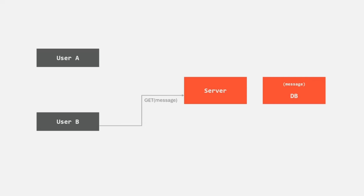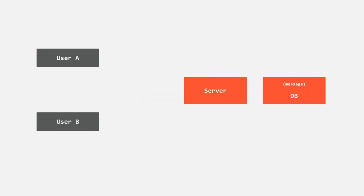Now, User B is not aware of the new message that User A sent. To get the new messages, User B has to make an HTTP GET request to the server requesting all the new messages. A TCP/IP connection is established between User B's device and the server. The server fetches all the messages and sends them in the response. Once the response is received, the TCP/IP connection is closed. So whenever new data arrives on the server, clients are not notified automatically — they must make a new request.